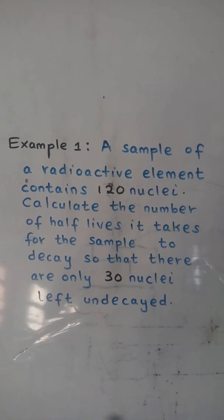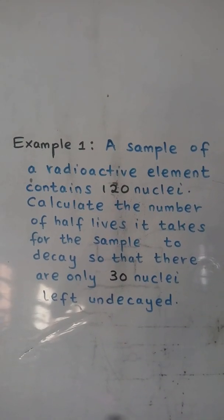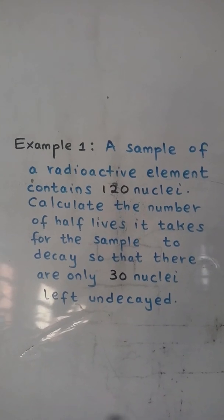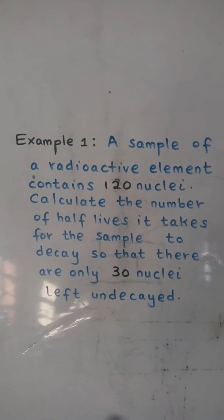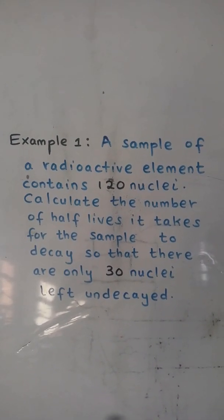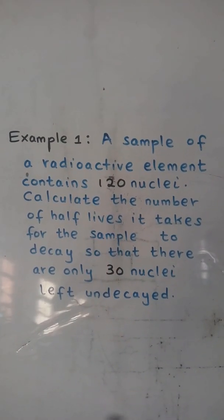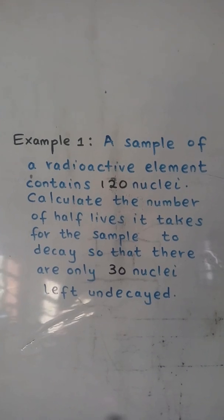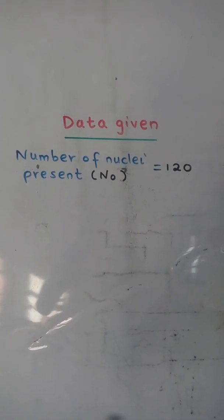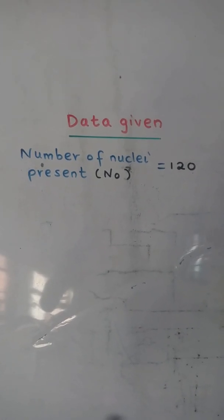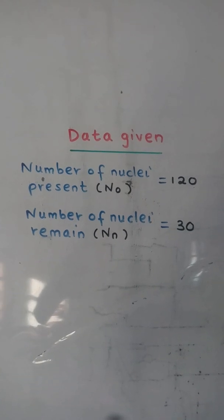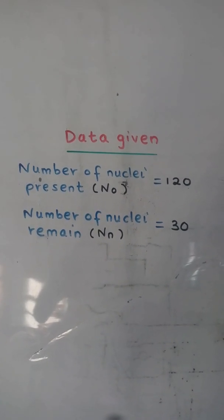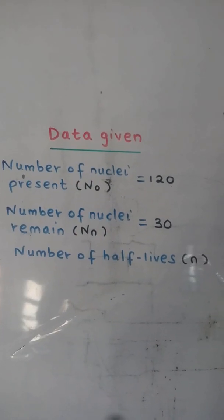Example 1: A sample of a radioactive element contains 120 nuclei. Calculate the number of half-lives it takes for the sample to decay so that there are only 30 nuclei left undecayed. Data given: number of nuclei present N₀ is equal to 120, number of nuclei remain Nₙ is equal to 30.